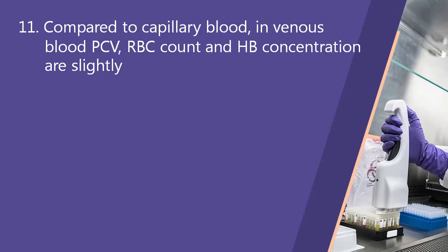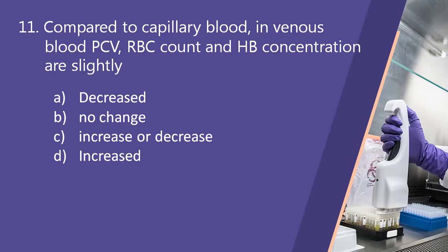Next question: compared to capillary blood, in venous blood PCV, RBC count and hemoglobin concentration are slightly? Option A, decreased. Option B, no change. Option C, increase or decrease. Option D, increased. The right answer is option D, increased. When taking venous blood, packed cell volume, RBC count and hemoglobin concentration are slightly increased compared to capillary blood.